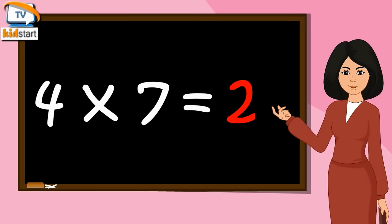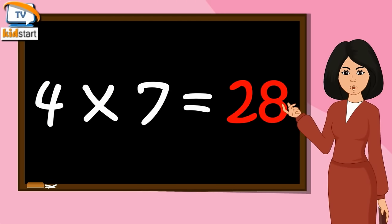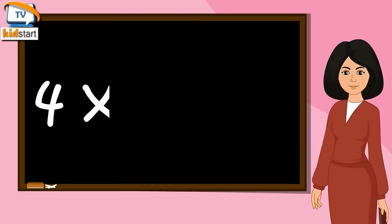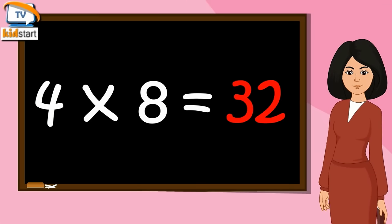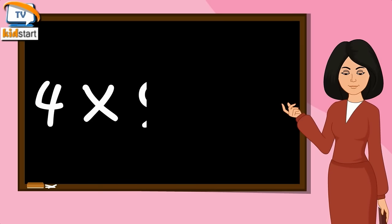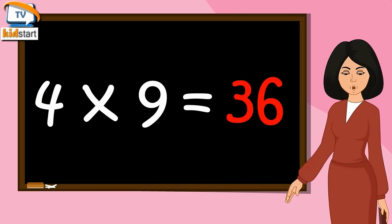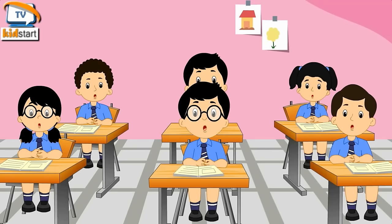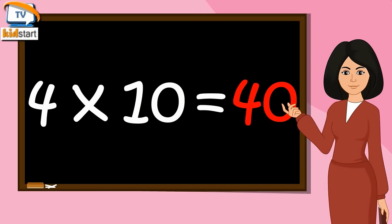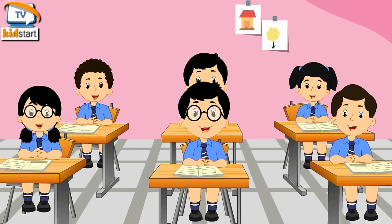Four sevens are twenty-eight. Four eights are thirty-two. Four nines are thirty-six. Four tens are forty.